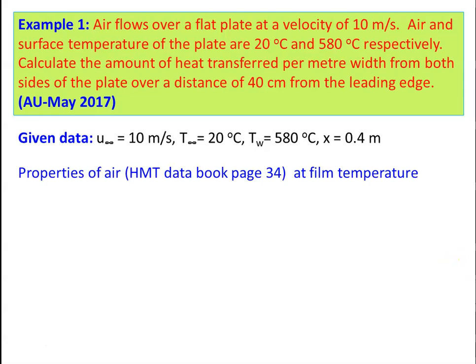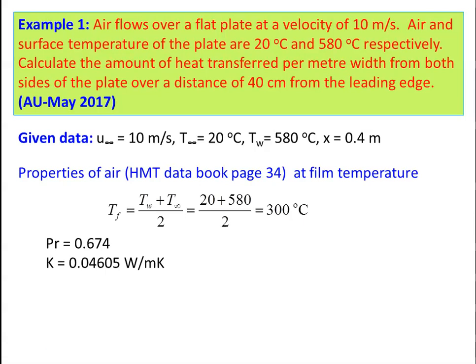Film temperature = (Tw + T∞) / 2 = (20 + 580) / 2 = 300°C. Properties of air at 300°C: Prandtl number = 0.674, thermal conductivity k = 0.04605 W/m·K, kinematic viscosity ν = 48.2 × 10⁻⁶ m²/s.